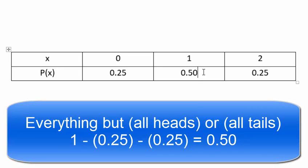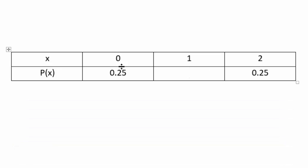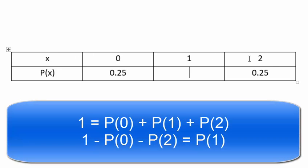This is a valid probability distribution because it adds to one and none of the probabilities fall outside of zero and one. X represents the number of heads: zero, one, or two heads. The probability of getting one head must be 50% — those are the rules for a valid probability table.